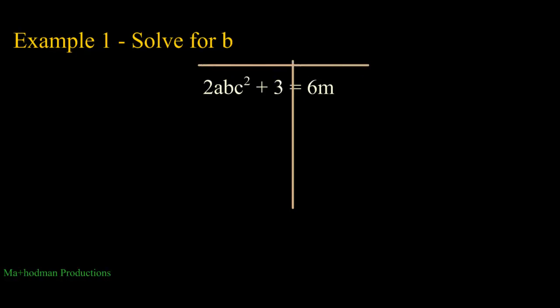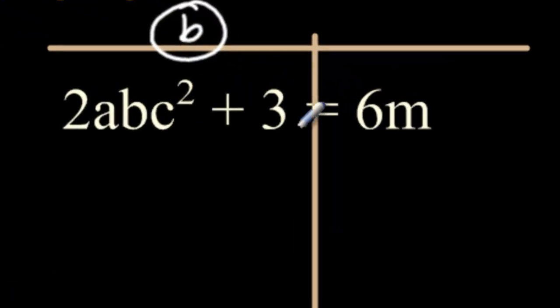I'm just going to start off by labeling the left side b, because that's where the variable is at. I want to get rid of a bunch of things on the left side, but let's first get rid of this 3 by subtracting 3 to both sides.